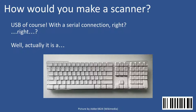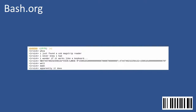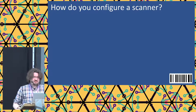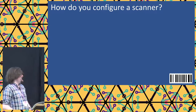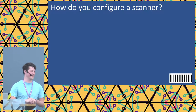What it does: if you scan a regular barcode — for example a product number — it types in that product number and presses enter. So these are USB HID devices. What could go wrong? And the next question is: how do you configure such a barcode scanner? Maybe you're thinking proprietary tooling, maybe some hardware hacking.